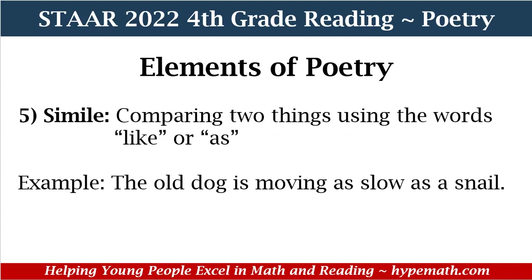Our next element of poetry is simile — comparing two things using the words like or as. For our example, we have: the old dog is moving as slow as a snail. That is our simile, and notice that the word we're using to compare the dog and the snail is the word as.